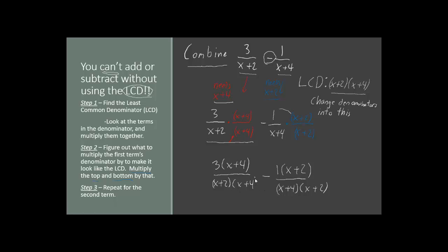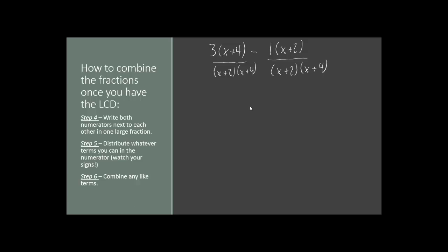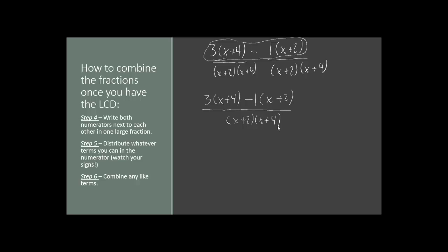Now we'll carry this expression forward. Now that we have two fractions with the same denominator, it's okay to subtract them. We can write these two fractions together as one fraction — we just combine the two numerators together. Make sure that you only write the denominator one time; you don't have to write it twice anymore, because now it's all one fraction.